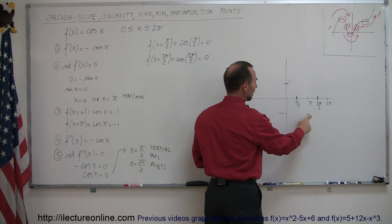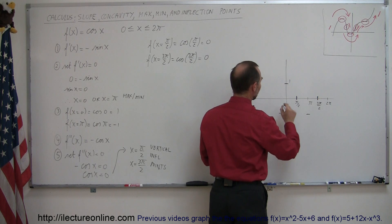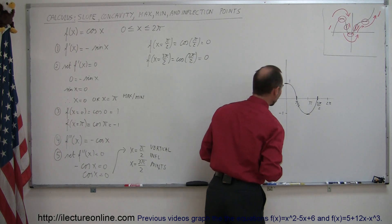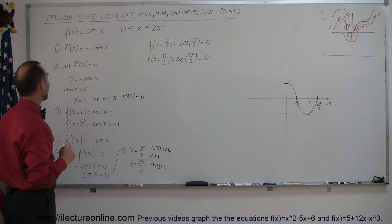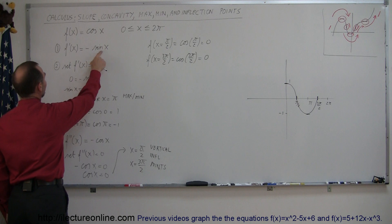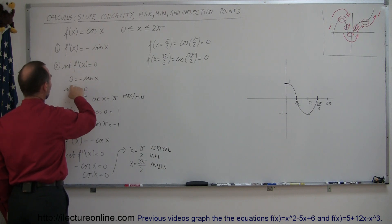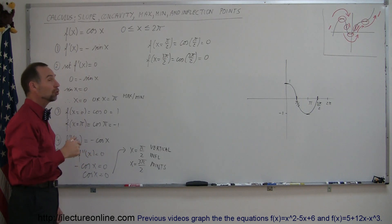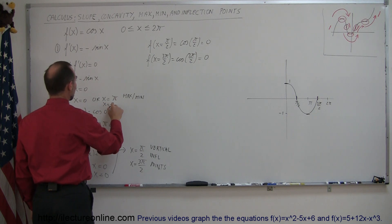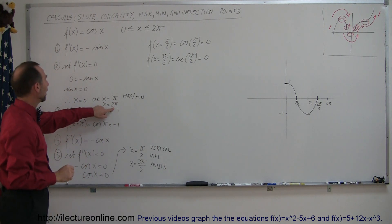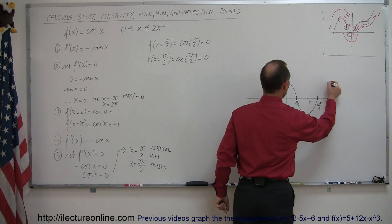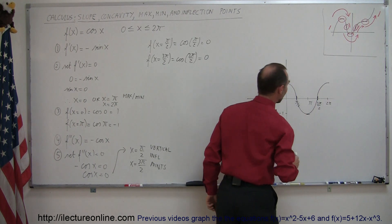So this looks like a max, that's a min, and those two are vertical inflection points — the curve goes like this. At 2π, going back to the first derivative, minus sine of x set equal to 0 gives sine of x equals 0, and at 2π that's still within our limits, so x equals 2π is also a valid critical point with slope 0.